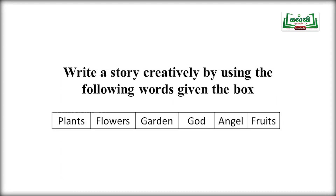Now we have one more activity. Write a story creatively by using the following words given in the box: plants, flowers, garden, god, angel, fruits. Use these words to create a short story.